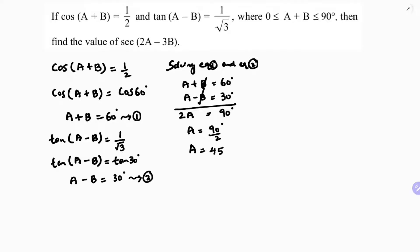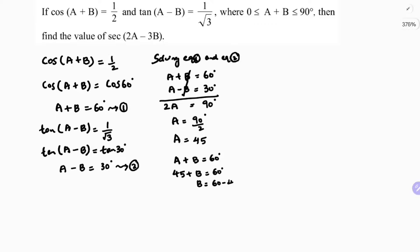Now next, if I substitute in A + B equals 60 degrees: 45 + B is 60 degrees, B equals 60 minus 45, so B equals 15 degrees.